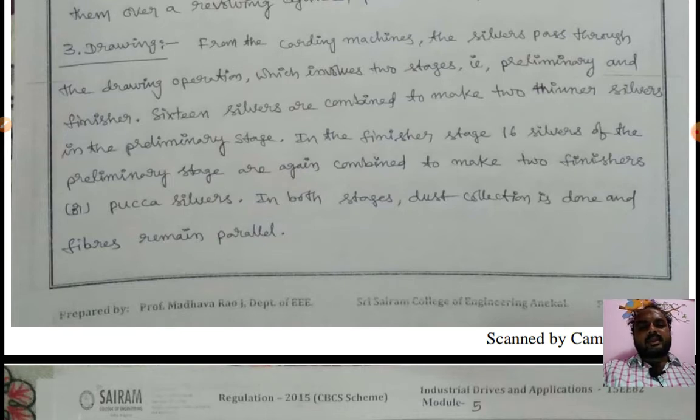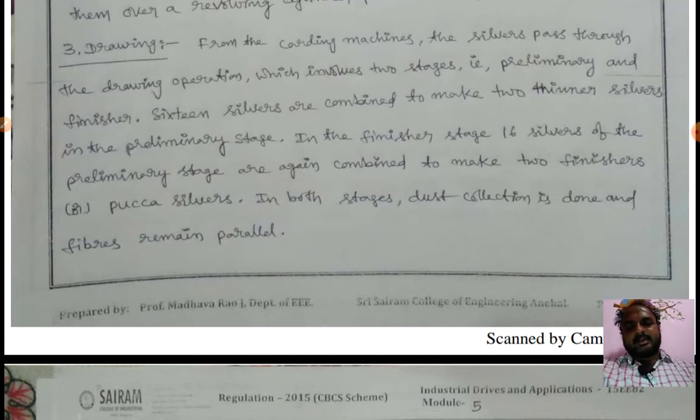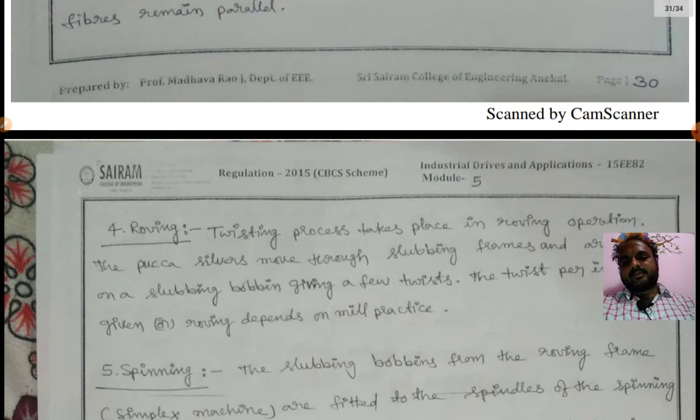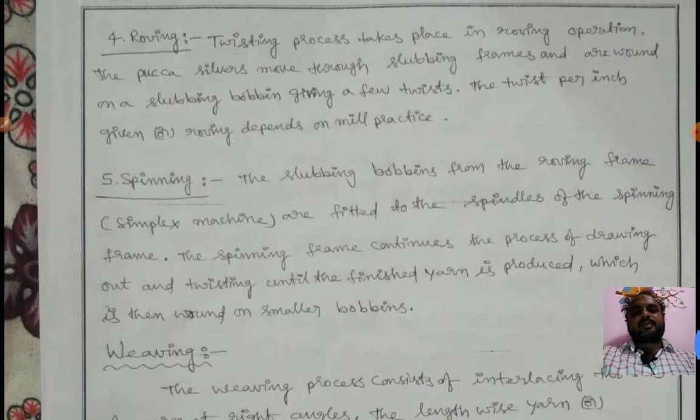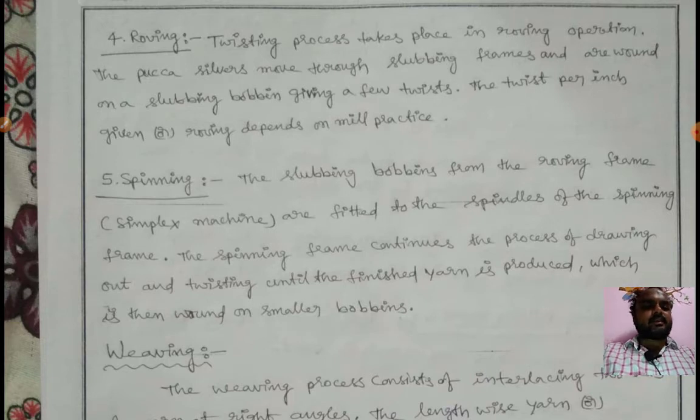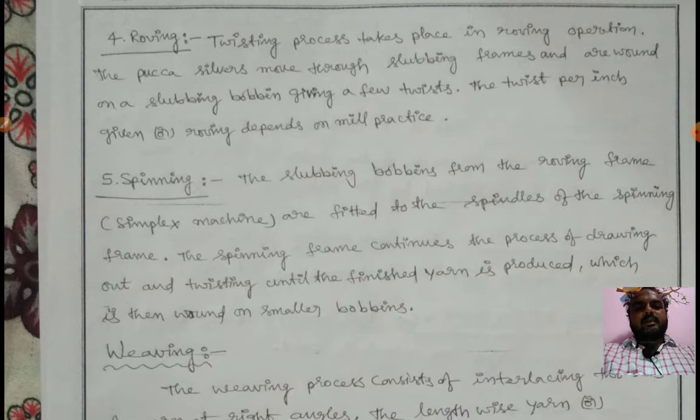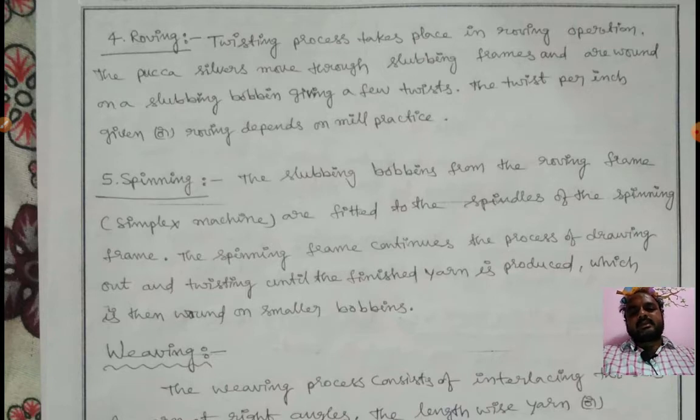In both stages, dust collection is done and fibers remain parallel. The fourth stage is roving, where the twisting process takes place in the roving operation.